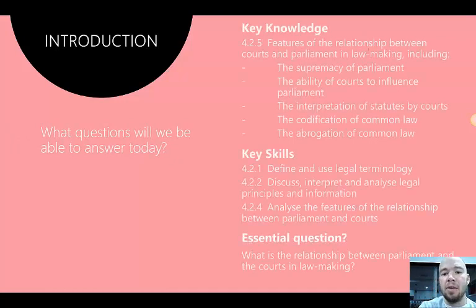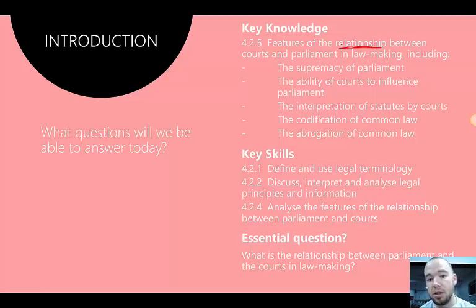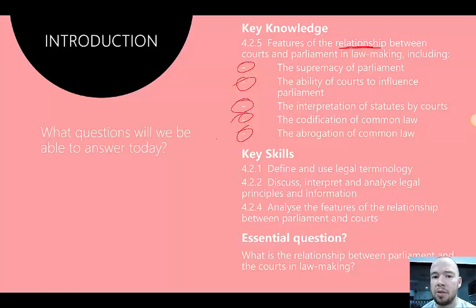So 4.2.5 — the question we're going to answer today surrounds the relationship between courts and parliament in lawmaking. We understand this relationship through the separation of powers in area 4.1, where the primary role of the courts is to resolve disputes that arise under laws made by parliament. We're looking at five things: the supremacy of parliament, the ability of courts to influence parliament, the interpretation of statutes by courts, and codification and abrogation, which go hand in hand.